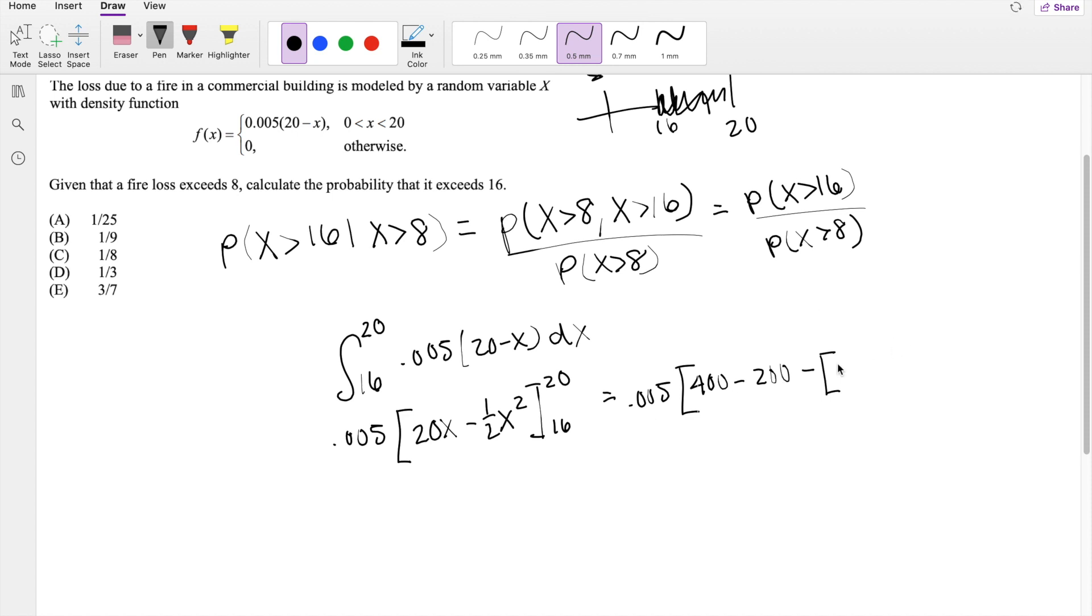Plugging in the lower limit, 20 times 16, which is 320, minus the lower limit, 16 squared, divided by 2, 128.